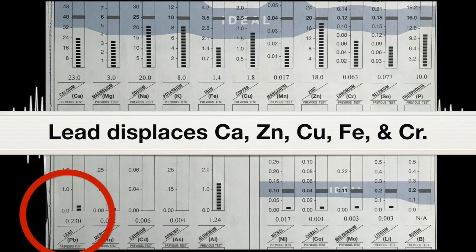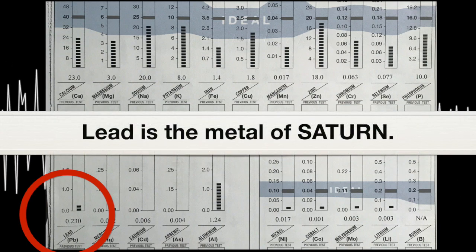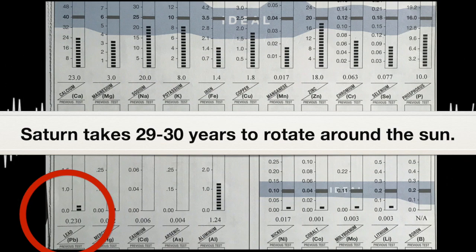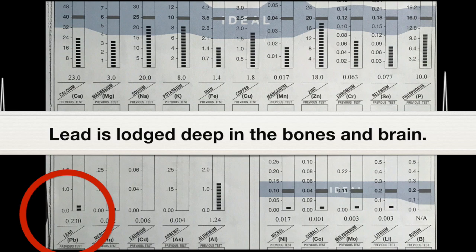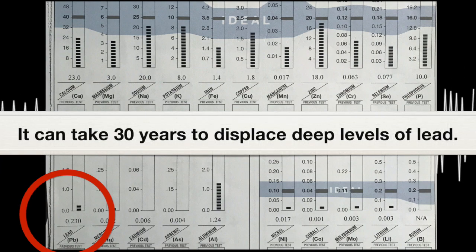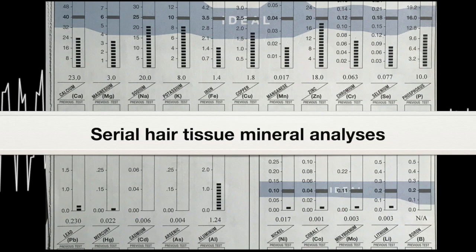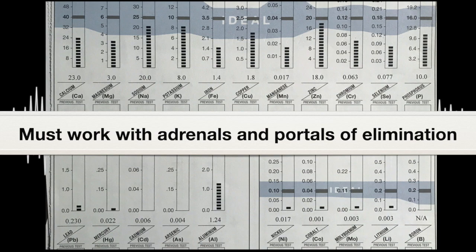And we're going to look at this as we go forward in analyzing her tissue profile. As we know, lead is the metal of Saturn. Saturn typically takes 29 to 30 years to rotate around the sun. So if lead is lodged in deep bone or in the brain or anywhere, it takes time for it to come out. So if it's in the bones, that's 30 years to displace the deeper levels of lead. So this is why we're going to do serial hair tissue analyses, because it has to go slow. You have to work with the adrenals. You have to work with the portals of elimination as we start to excavate these metals.